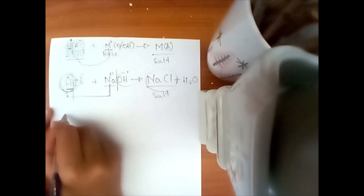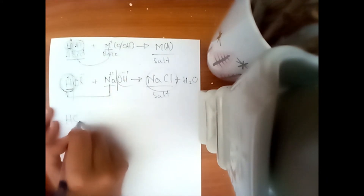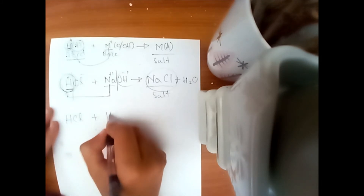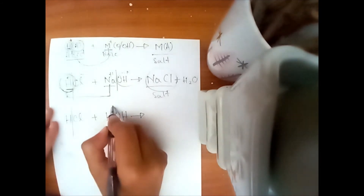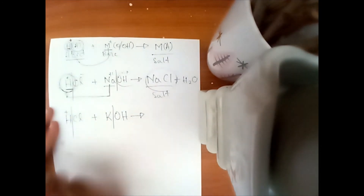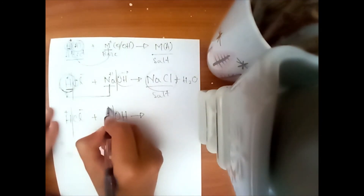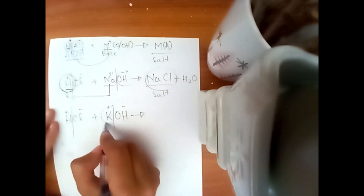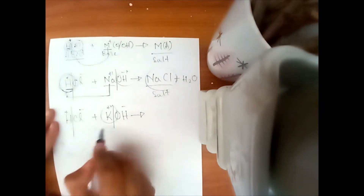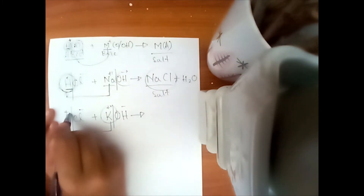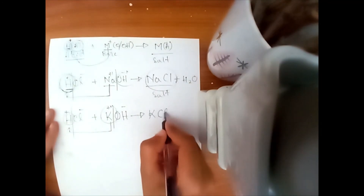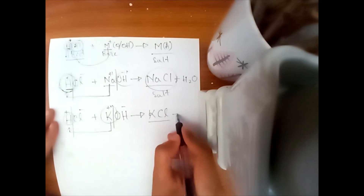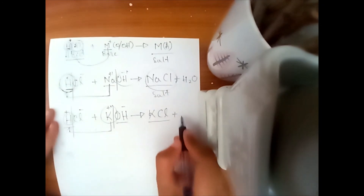Another example: hydrochloric acid reacts with potassium hydroxide, which is a base. The positive part of the base — the metal — will replace the H⁺ of the acid to produce the salt KCl, that is potassium chloride, and this will again make water.